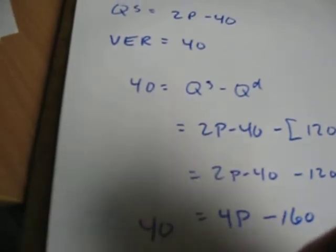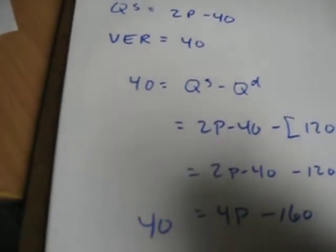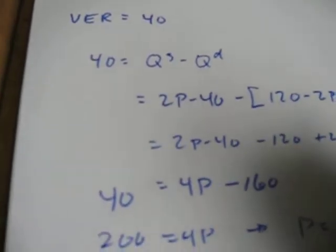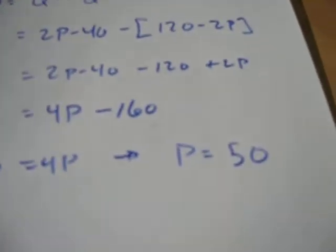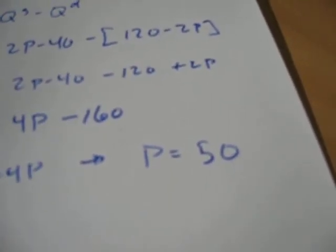Take the 160 over to the other side. 200 is equal to 4 times the price. That tells us that the price in our country with the VER is going to be 50.